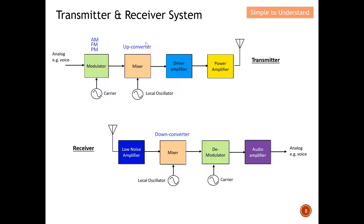With low noise and high gain, we can achieve a lower overall noise ratio. After amplification, the signal passes to the mixer. The mixer in the receiver performs the reverse role of the mixer at the transmitter — it moves the frequency from high frequency to low frequency. After that, the signal runs through the demodulator, which recovers the original modulating signal. Finally, an amplifier boosts the signal large enough so that we can hear the voice.